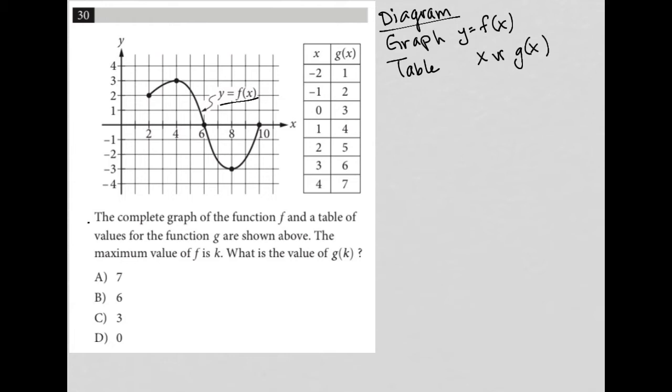The information says the complete graph of the function f and a table of values for the function g are shown above. Complete means it doesn't continue on in any other directions. The complete graph of f is there, and the table of values for the function g is there.